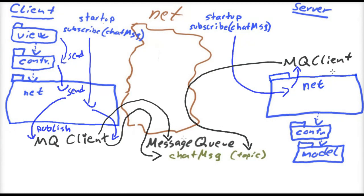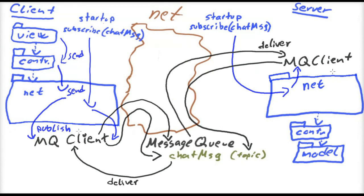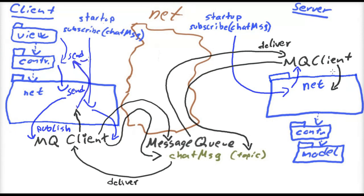The message is delivered through the network to the message queue client on all the subscribing nodes, and also to the server's message queue client, which informs our code in the net package. We have probably registered a listener in the net package. On the client, the message will appear in the view — perhaps there is an observer registered, or perhaps we make an ordinary upcall to the controller which then calls the view. On the server, there is a call to the controller, which then will inform the model that this message was now delivered.